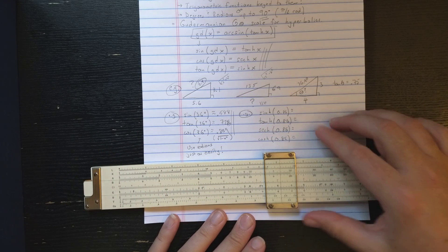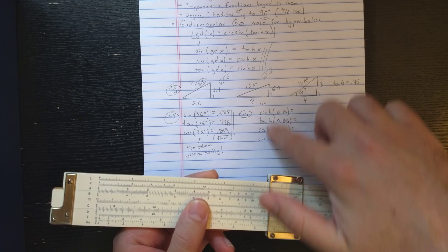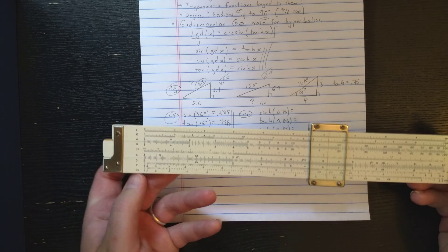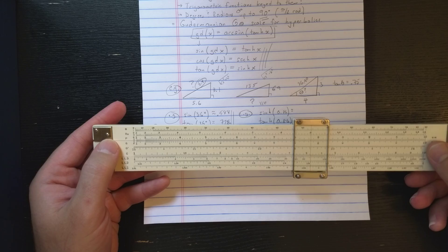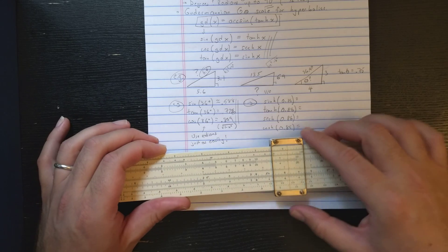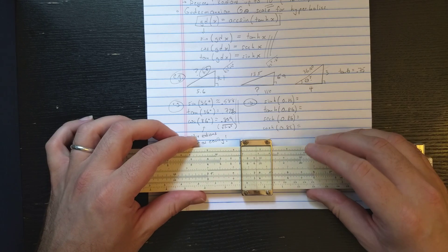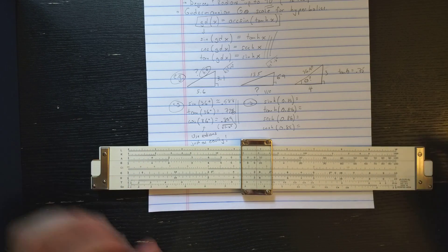To compute the sinh, for any of the hyperbolic functions, I use g theta instead of theta or r theta. So I use the Gudermanian scale. So let's set that to 0.86, which is close to the middle here. So I set 0.86 on the Gudermanian.